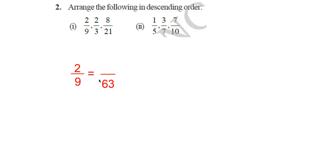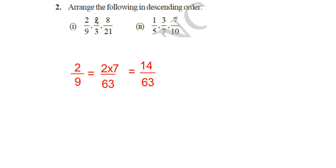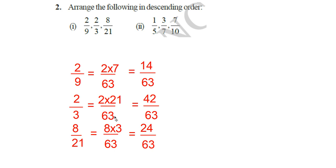Now, 2 by 9, you make the denominator 63. To make 63, you have to multiply 9 sevens. 9 sevens are 63. So you multiply 2 by 7 for the numerator. That is 14 by 63. Now similarly, 2 by 3 also you make the denominator 63. And 8 by 21 also you change the denominator into 63. So you get 2 by 3 is equal to 2 into 21 by 63. That is 42 by 63. And 8 by 21 you will get 8 into 3 by 63. That is 24 by 63.